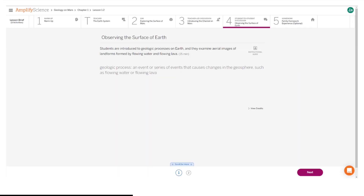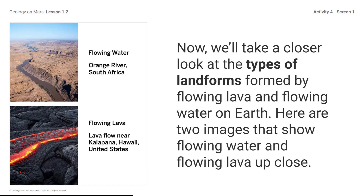Here is what your student screen looks like for this part of the lesson. Now we will take a closer look at the types of landforms formed by flowing lava and flowing water on Earth. Here are two images that show flowing water and flowing lava up close.